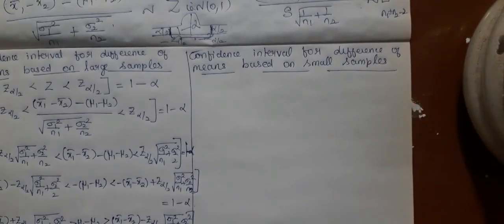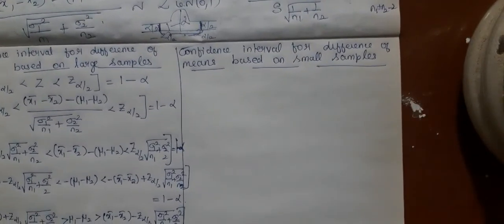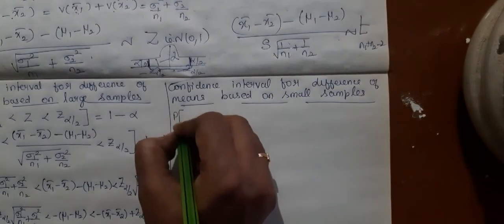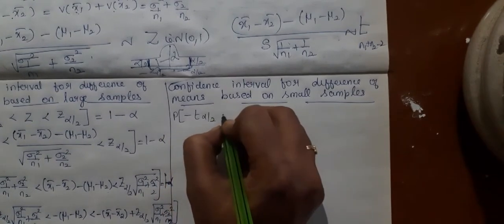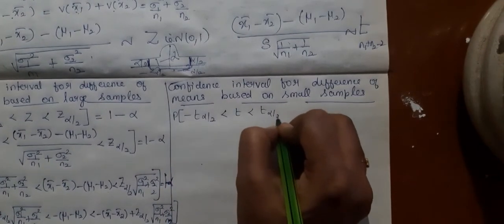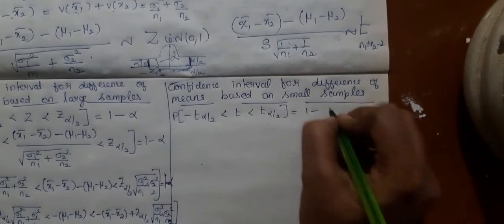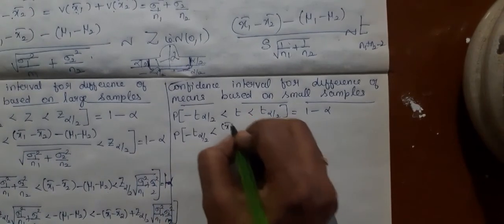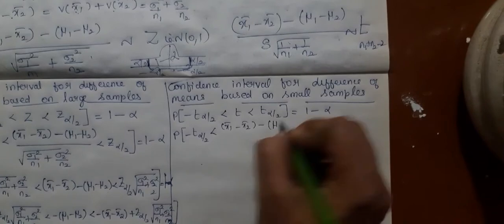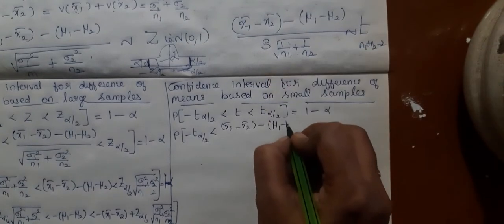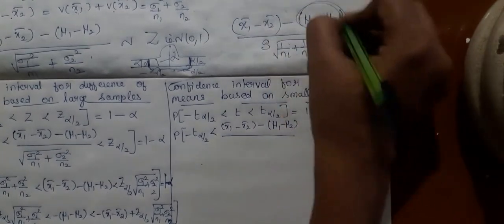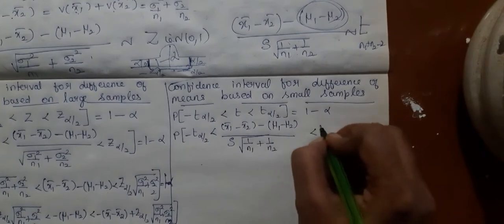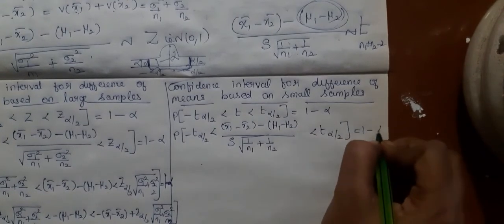Now, what happens when the sample sizes are small and the population variances are unknown? You make use of the t-statistic. The probability of minus t_α/2 less than t less than t_α/2 equals 1 minus alpha. The statistic to consider here is the one containing mu1 minus mu2, since the purpose is to find the confidence interval for the difference of means.